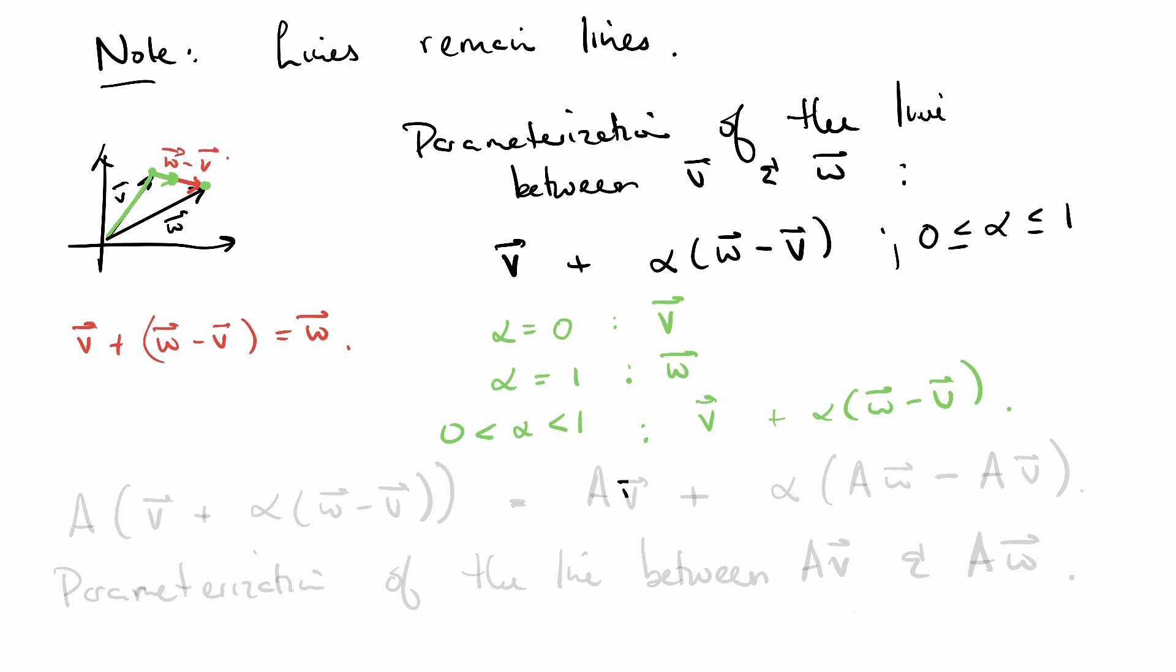What happens when we apply A to it, some matrix? Well, matrix multiplication distributes across a plus and it commutes with scalar multiplication. So what we get is AV plus alpha AW minus AV, which following the same pattern is the parametrization of the line between the AV and AW.